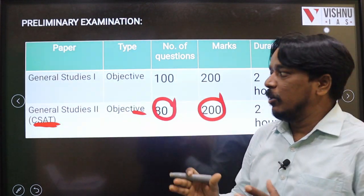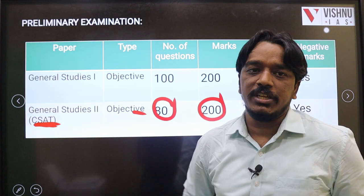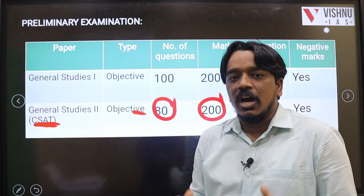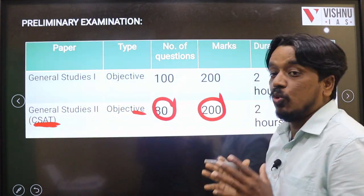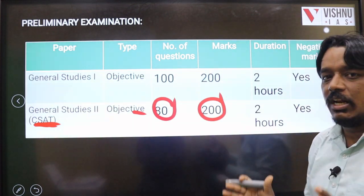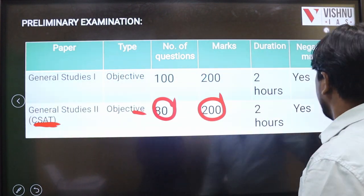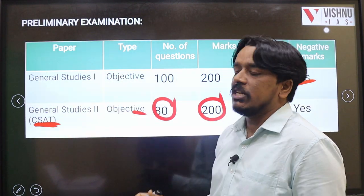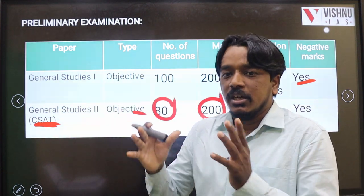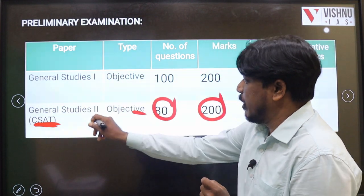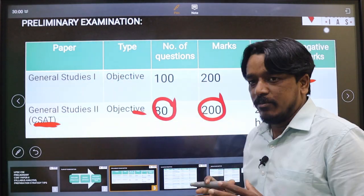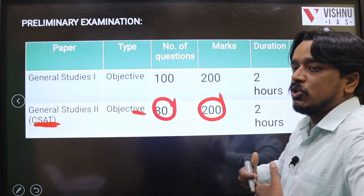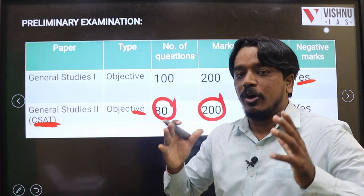Paper 2 is for 200 marks. Each question carries 2.5 marks. General Studies Paper 1 consists of 100 questions and 200 marks. Both papers have a 2-hour time limit. Negative marking applies to both papers at 0.33. In General Studies Paper 2 — CSAT — with 80 questions worth 200 marks at 2.5 marks each, the negative marks are also proportionally higher compared to Paper 1.